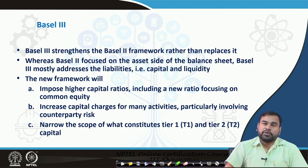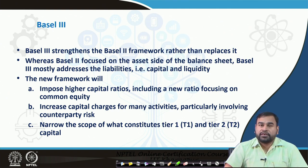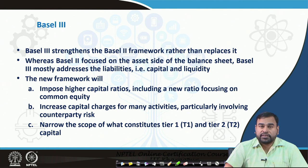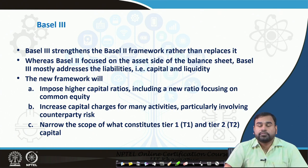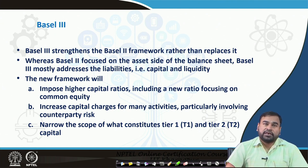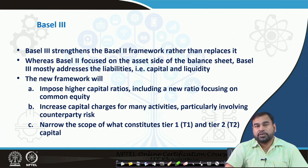Whenever you talk about Basel 3, they are mostly trying to highlight the liquidity side of commercial banks, which comprises both capital and liquidity. The new framework imposes a higher capital adequacy ratio, including a new ratio focusing on common equity, and also focuses on increased capital charges for many activities particularly involving counterparty risk. It also narrows the scope of tier 1 capital and tier 2 capital, making it a more strict and robust ratio.